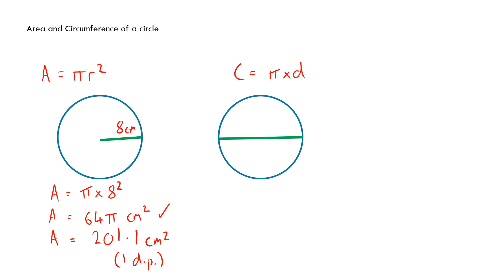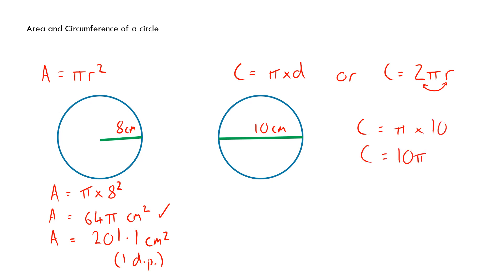The circumference equals π times the diameter, or equivalently, circumference equals 2πr — both are the same since doubling the radius gives the diameter. These formulas will be on the formula sheet for summer 2023, but may not be given in future. If the diameter is 10 cm, circumference equals π times 10, which is 10π cm. Typed into a calculator to one decimal place, that gives 31.4 cm.